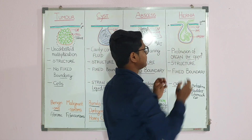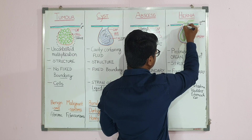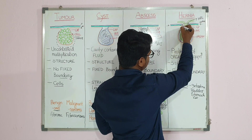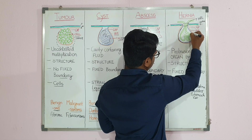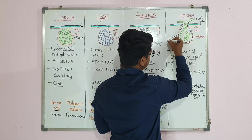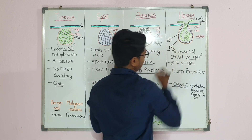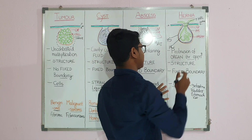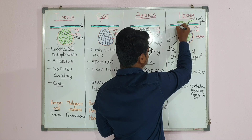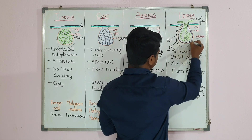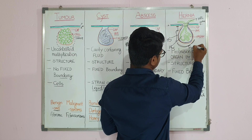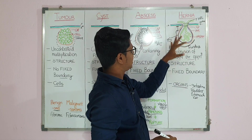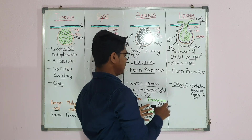A hernia has three parts: the opening is known as the hernia ring, the protruding pouch is the hernia sac, and the inner contents are the hernia content. You may also find subdivisions: the neck, the body, and the fundus of the sac. Mostly, the three key terms are hernia ring, hernia sac, and hernia content.